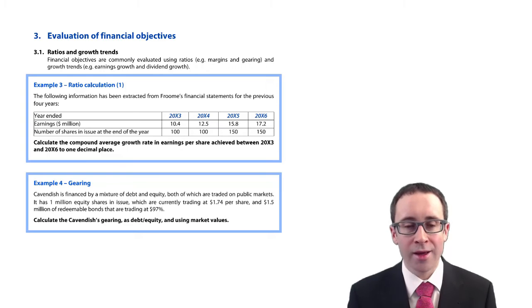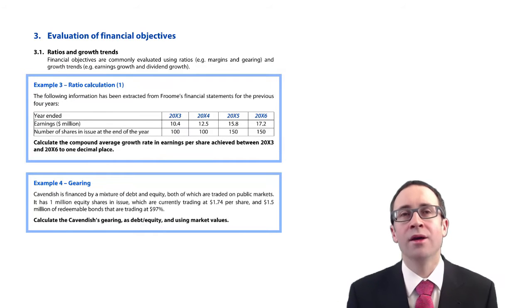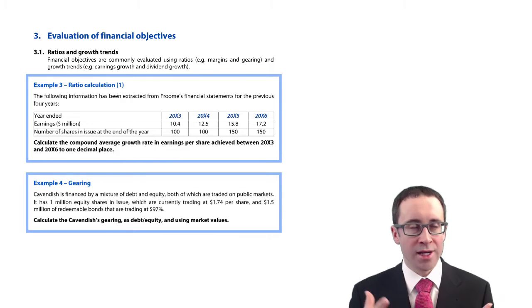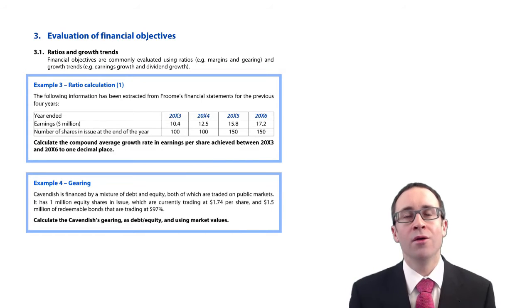Clearly, we're going to look at ratios to start off with. It mentions margins and gearing. The second example looks at gearing because if a company is looking to take out more debt, we want to ensure it doesn't breach any potential covenants.